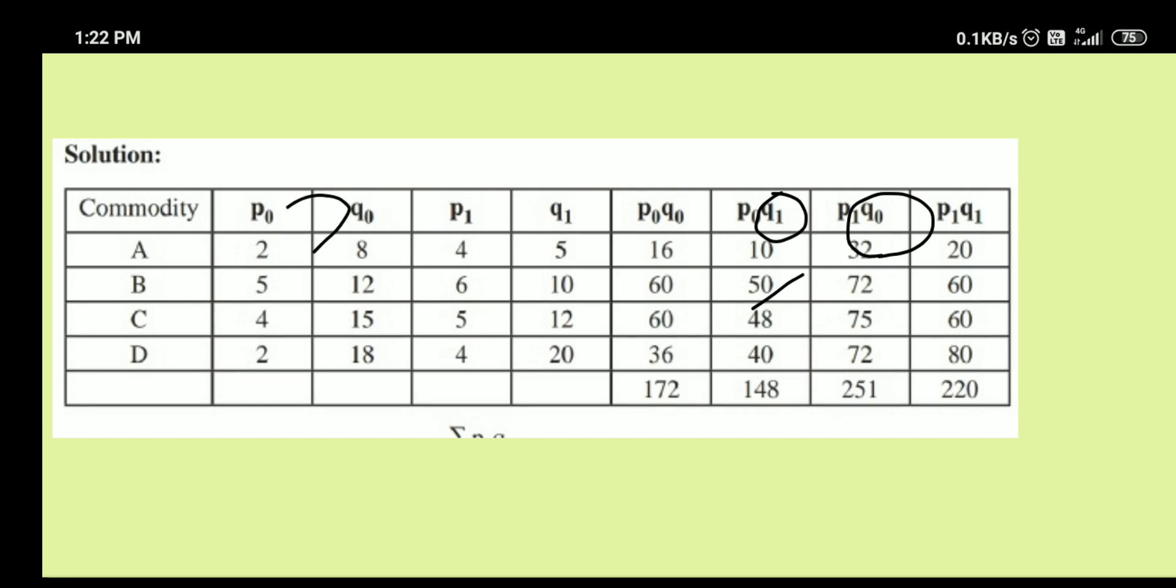Next, P0 Q1. That is 2 into 5, 10. So the next column is P1 Q0. P1 Q0 is P1 multiplied with Q0 column. Multiply and add all the answers.